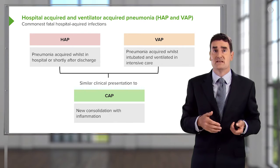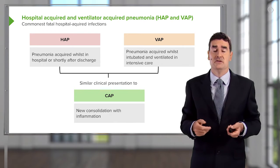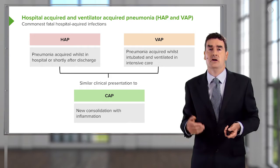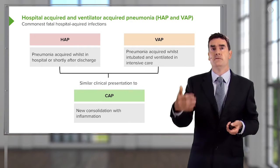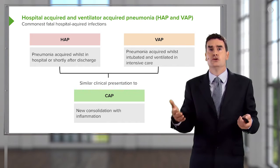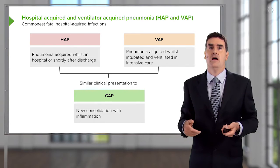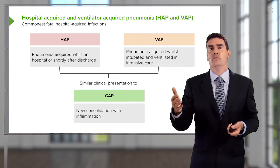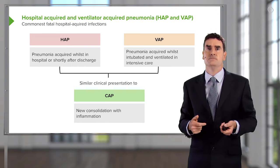The actual presentation of hospital-acquired pneumonia is pretty much the same as community-acquired pneumonia: cough, fever, shortness of breath, with new consolidation and a rise in the markers of inflammation.